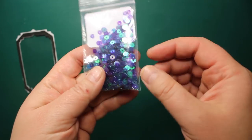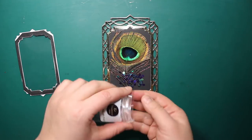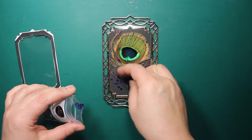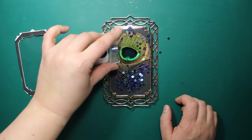The sequins I'm using are Night Sky by Cat Scrappiness. They're shimmering purple and green and they match the feather perfectly. I'm sprinkling some of them right on top of the feather.